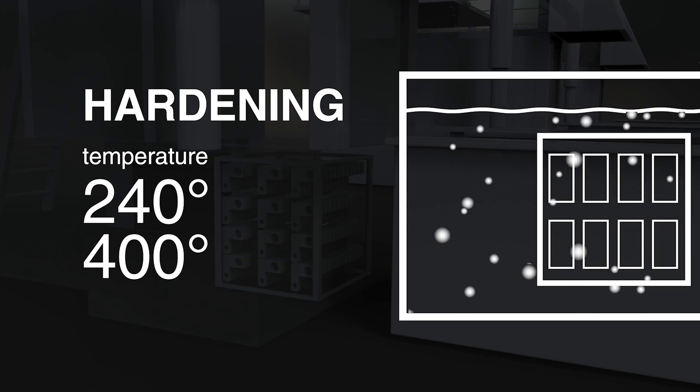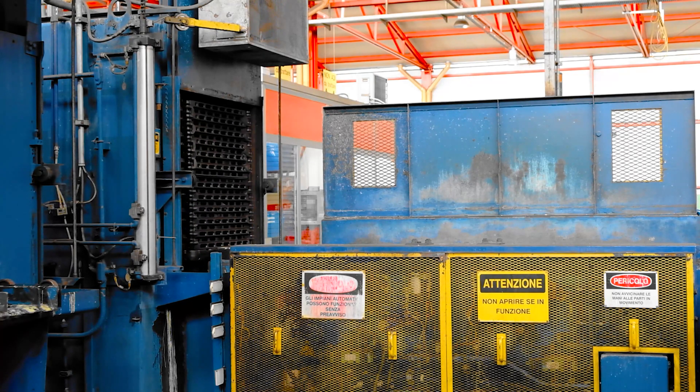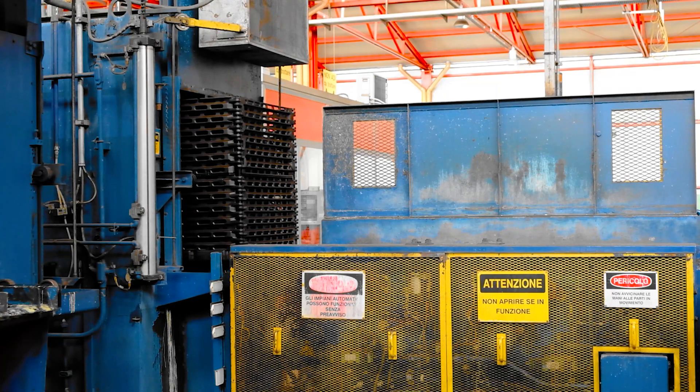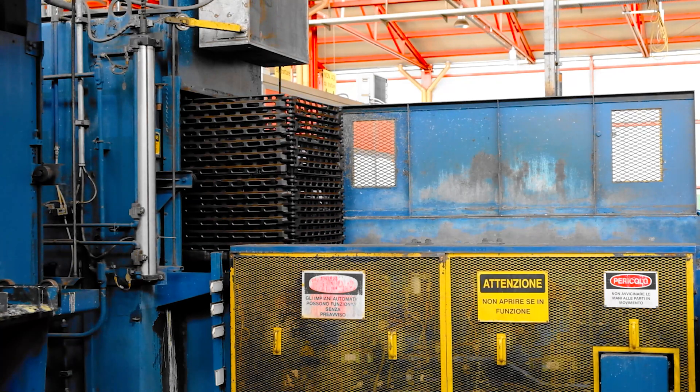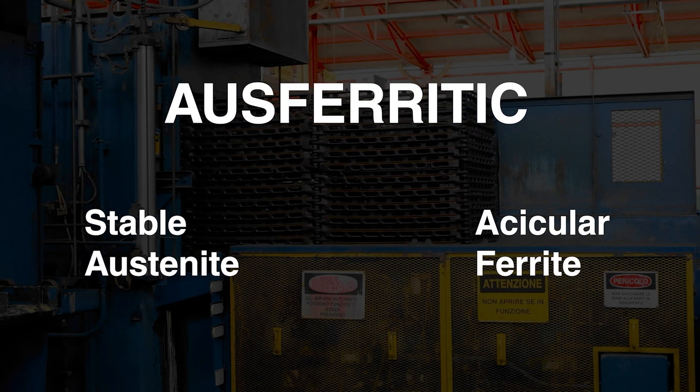At the end of this cycle, the matrix of the material will have transformed into a matrix with an ausferitic microstructure, that is, containing a mix of stable austenite and acicular ferrite.